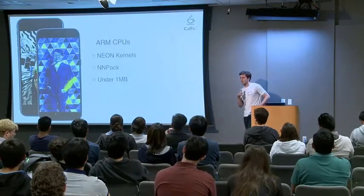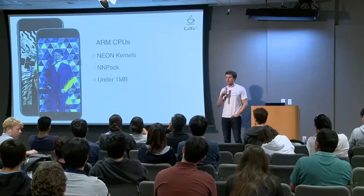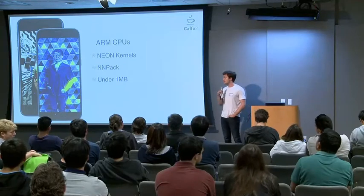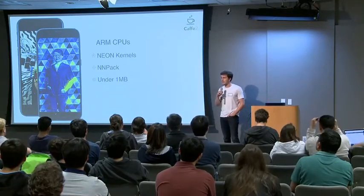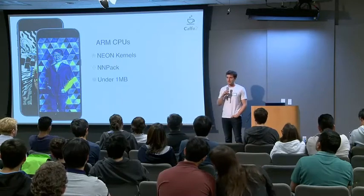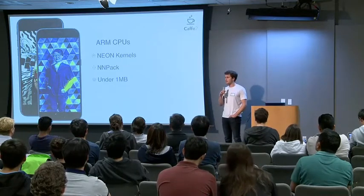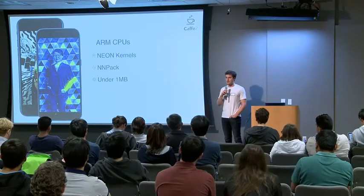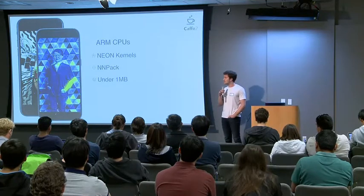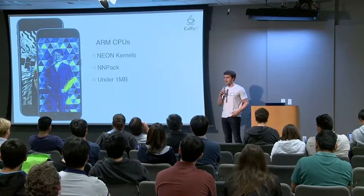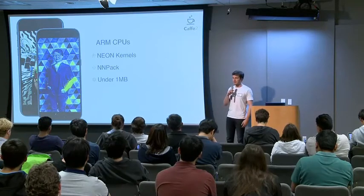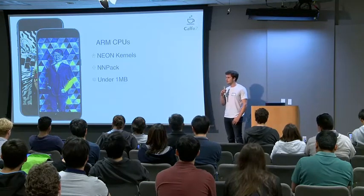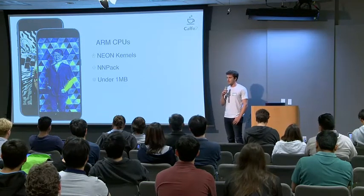One of the things we did to get mobile inference fast with neural networks was to optimize ARM CPUs. We heavily leverage NEON kernels, which are math kernels written using NEON intrinsics to get basic SIMD operations going quite quickly. We do this manually for convolution transpose. We also heavily use a library called NNPACK, which Yang Qing mentioned earlier, and Marat is actually here today. This library is extremely fast.